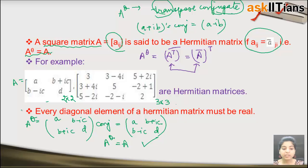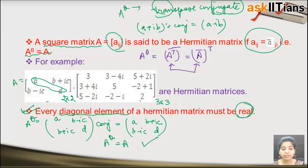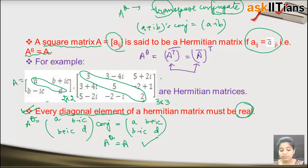An important property: every diagonal element of a Hermitian matrix must be real. You can see in the example that the diagonal elements are real. So the diagonal elements of a Hermitian matrix are always real.